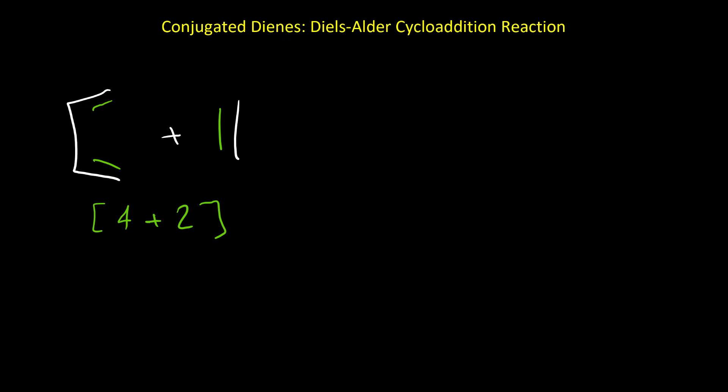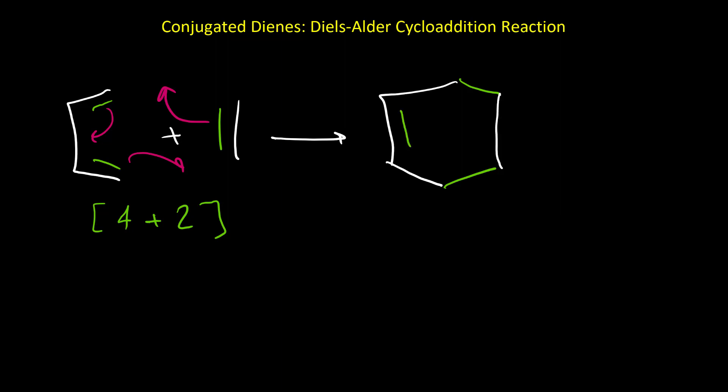This reaction doesn't have any intermediate. All three double bonds move simultaneously, and it can produce a cyclohexene product. So the reaction of an alkene with the conjugated diene can produce cyclohexene derivatives.